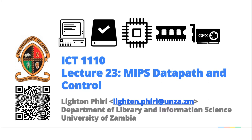We are transitioning to lecture series number 23. We are done now with MIPS assembly. I believe we've got to a stage where we have an appreciation of what happens behind the scenes when you implement a computer application using a high-level programming language and compile it. The instructions are converted into a form the computer is able to understand and execute. Lecture series number 23 is building on that — MIPS data path.